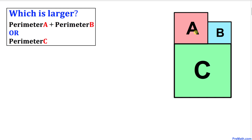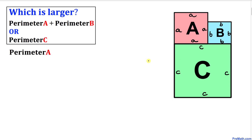Let's focus on square A and I'm going to call each side of this square lowercase a. Since this is a square, each and every side is going to be a. Now let's focus on square B — I'll call each side lowercase b, so each side is b. And now let's focus on square C — I'll call this side lowercase c, and since this is a square, each and every side is going to be c.